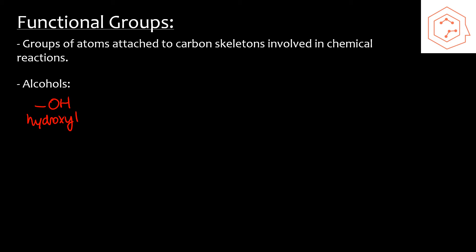Functional groups are specific groupings of atoms within molecules that have their own characteristic properties. These are groups of atoms that are frequently attached to carbon skeletons, and they're usually involved in chemical reactions depending on their capabilities or properties. The first type of functional group we'll talk about are alcohols. Alcohols have a hydroxyl group represented by OH, where the R represents the carbon backbone or chain. The key feature about alcohols is that they help dissolve organic compounds and they are polar.